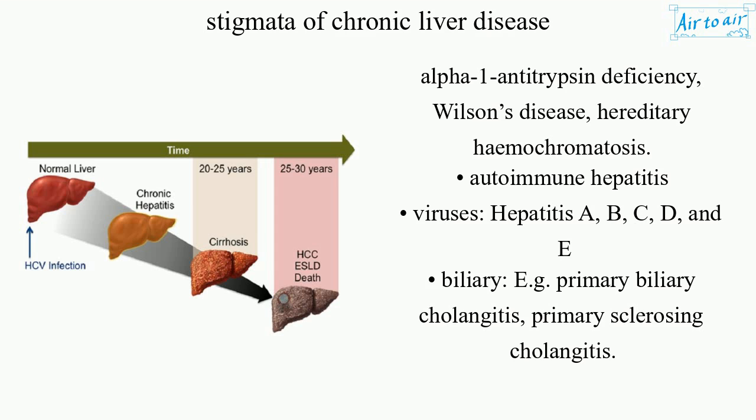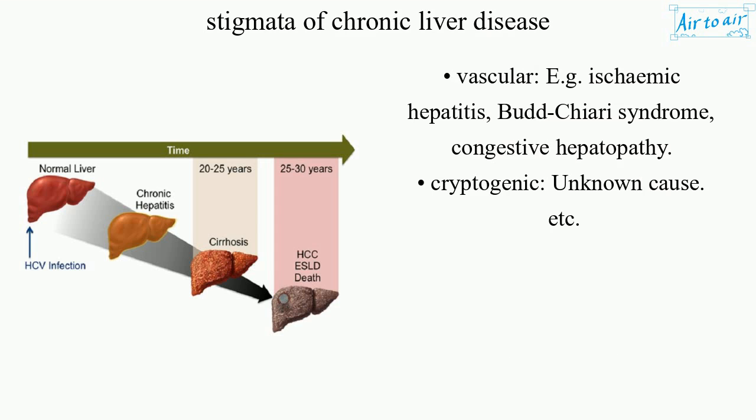Biliary causes include, e.g., primary biliary cholangitis and primary sclerosing cholangitis. Vascular causes include, e.g., ischemic hepatitis, Budd-Chiari syndrome, and congestive hepatopathy. Cryptogenic causes are of unknown origin, etc.